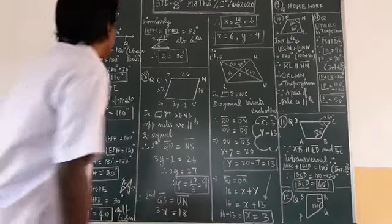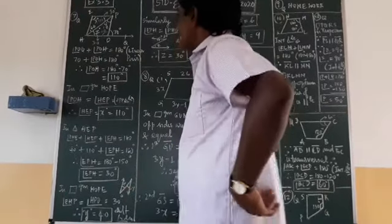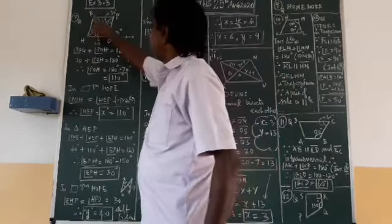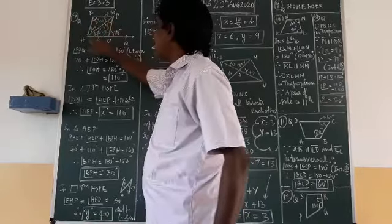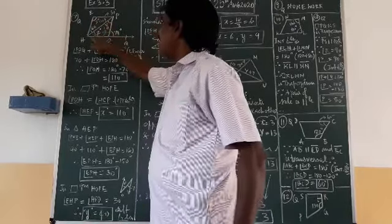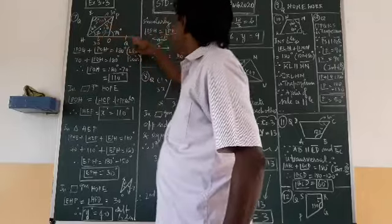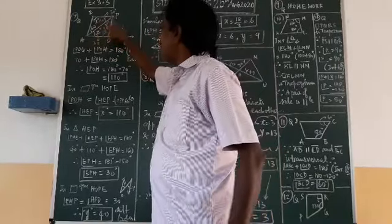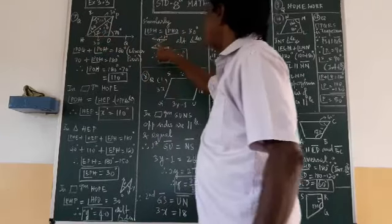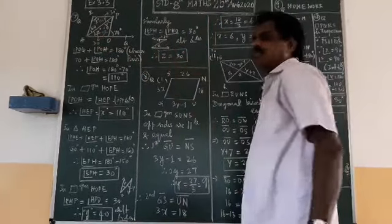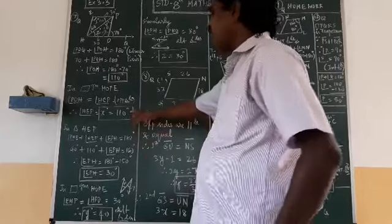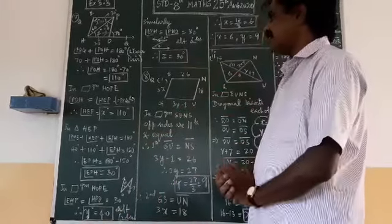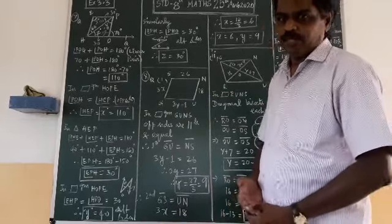Similarly on the other side, Z is equal to 30 degree. So X is 110, Y is 40 and Z is 30. That is your seventh question.